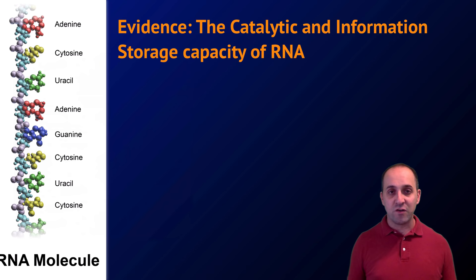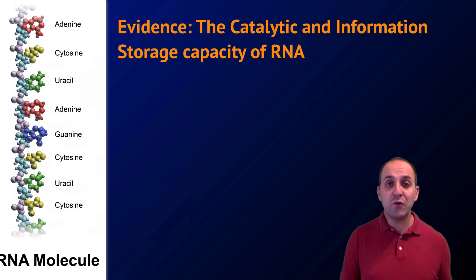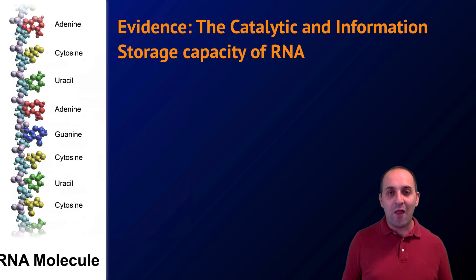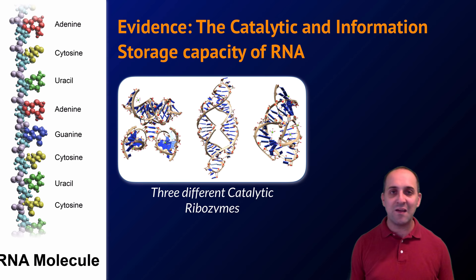Our next step is developing an information storage molecule. In modern cells that's DNA, but there's significant evidence that early cells may have used RNA. RNA is similar to DNA but single-stranded with a few chemical differences. Importantly, RNA can both store information — it's what DNA is copied into before being turned into proteins — and also catalyze reactions. Ribosomes are actually built out of RNA molecules.